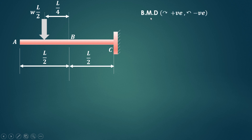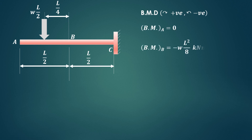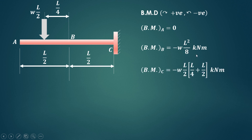The conventions for the bending moment diagram: clockwise is positive and anticlockwise is negative. Bending moment at the free end A is 0. Bending moment at B: considering the point load WL by 2 at a perpendicular distance of L by 4, it produces an anticlockwise moment about B, so it is negative: minus WL by 2 into L by 4, giving minus WL squared by 8 kNm.